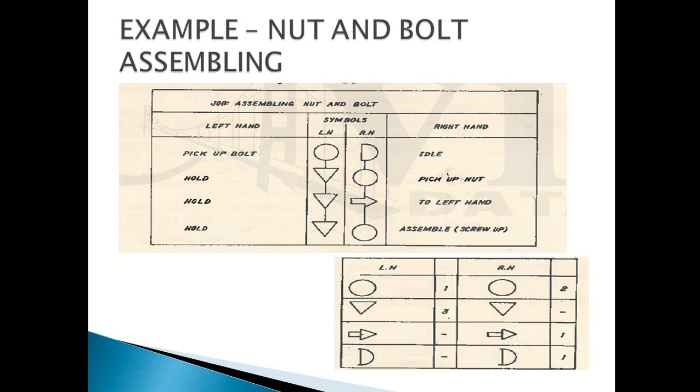First, we pick up the bolt in our left hand. This action is denoted by the round symbol, so the first step is over. During the second step, when we are picking up the bolt in our left hand, our right hand is in an idle position.